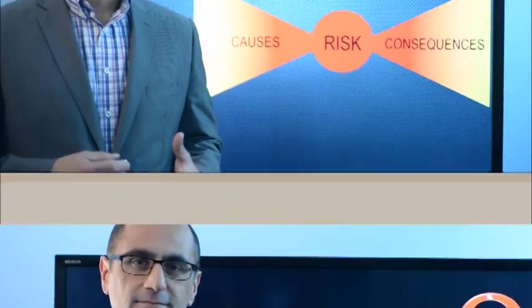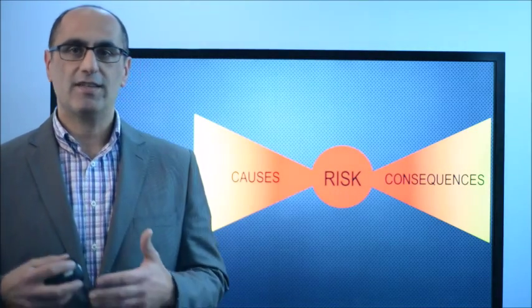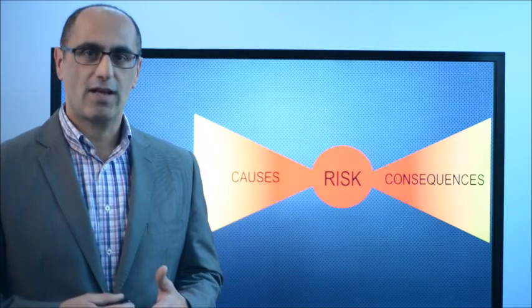So let's take a closer look at the Bowtie Diagram. A Bowtie Diagram is shaped like a bowtie with the causes of a risk on one side, the risk event in the centre, and the consequences on the other side.